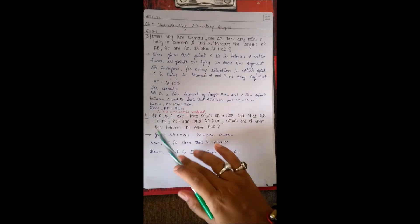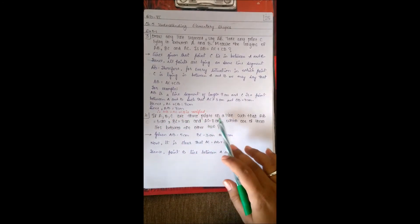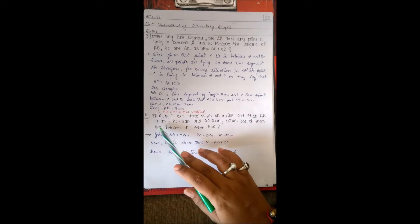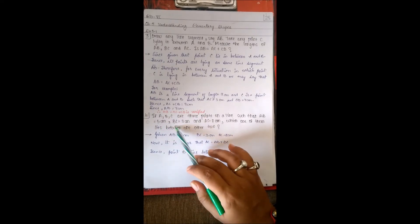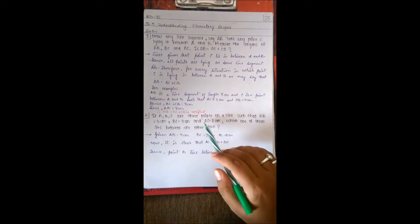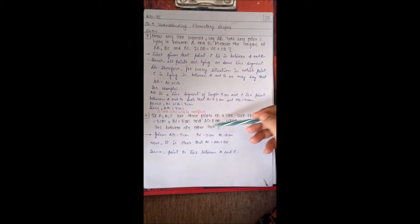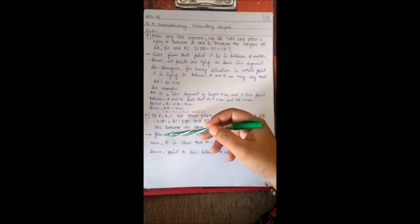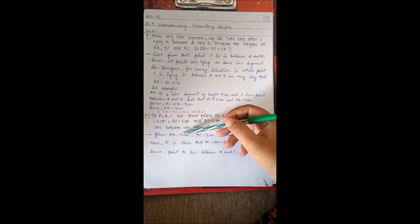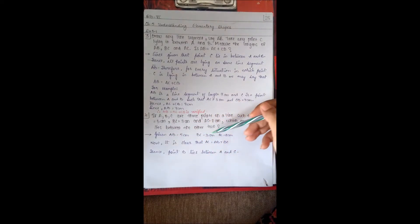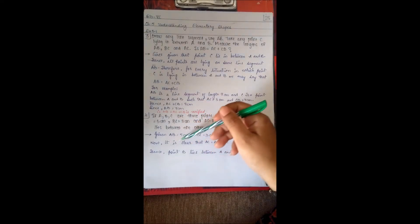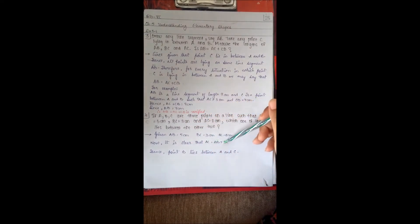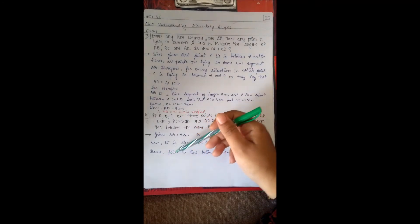Question 4: If A, B, C are three points on a line such that AB = 5 cm, BC = 3 cm and AC = 8 cm, which one of them lies between the other two? Since AC = AB + BC (5 + 3 = 8), it is clear that point B lies between A and C.